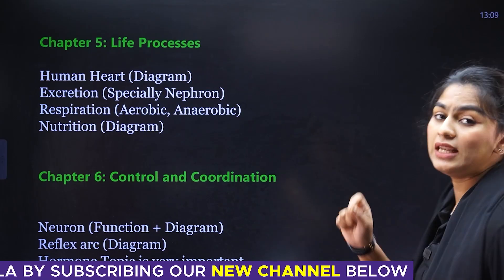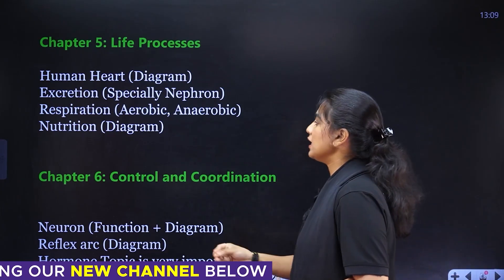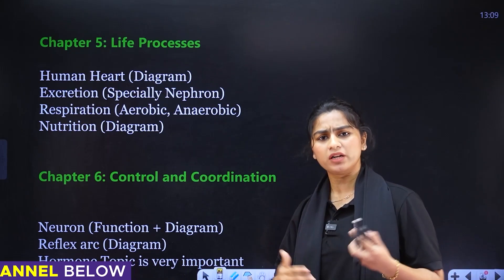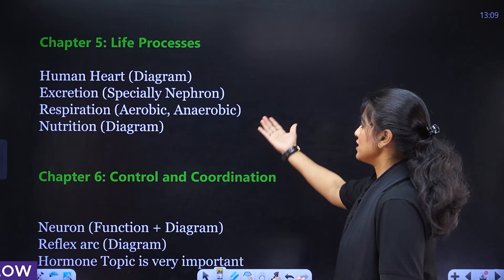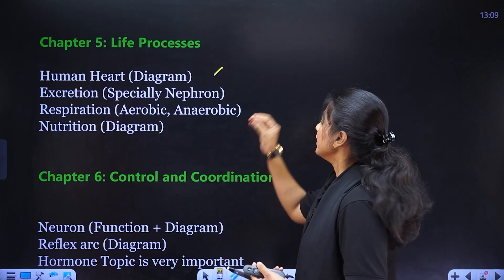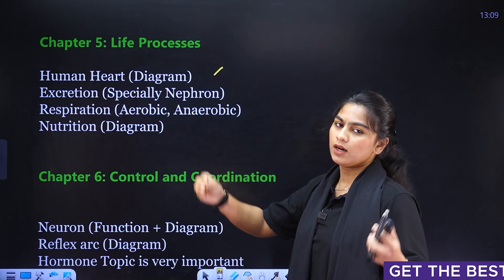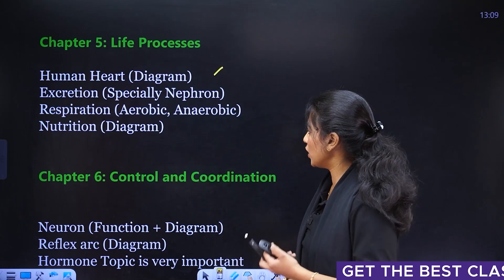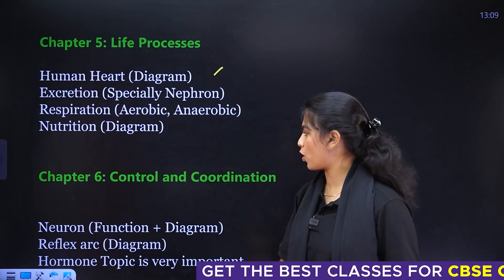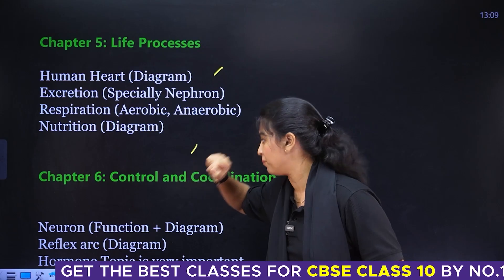Chapter five is Life Processes — the first Biology chapter. In this chapter, the human heart diagram should be thoroughly studied. For excretion, especially nephron functions are important. For respiration, aerobic and anaerobic processes are important. The nutrition diagram is also very, very important.